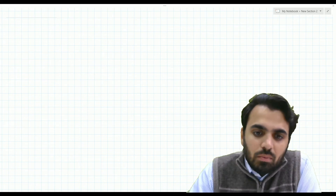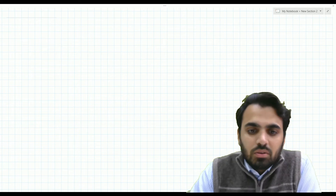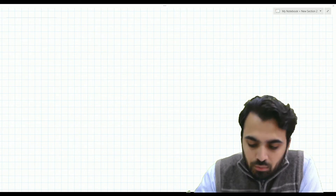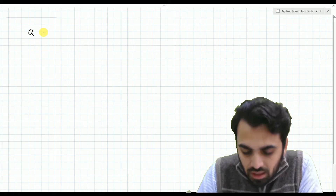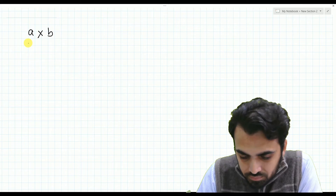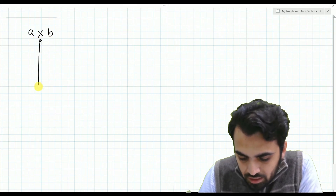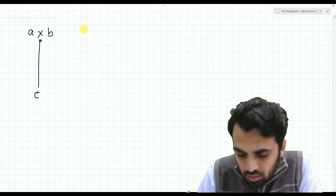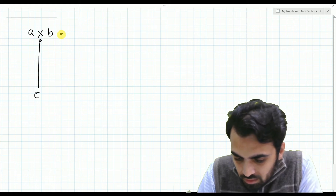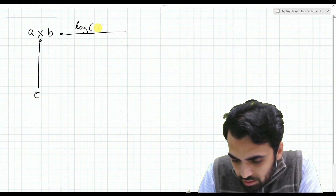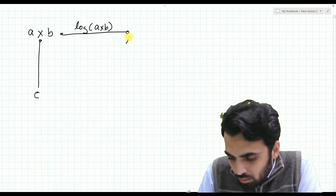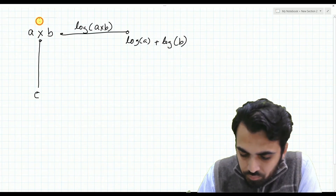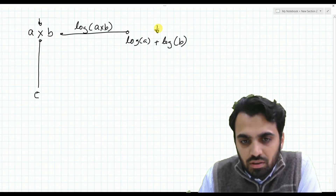In our prior discussions we have talked about Laplace transforms. To reiterate with a simple analogy: if we have two numbers a and b, we can perform a direct multiplication to achieve a result c. But we can also take the log of a times b, and from logarithmic properties we get log of a plus log of b — so from multiplication we have moved to addition, which is a simpler operator.